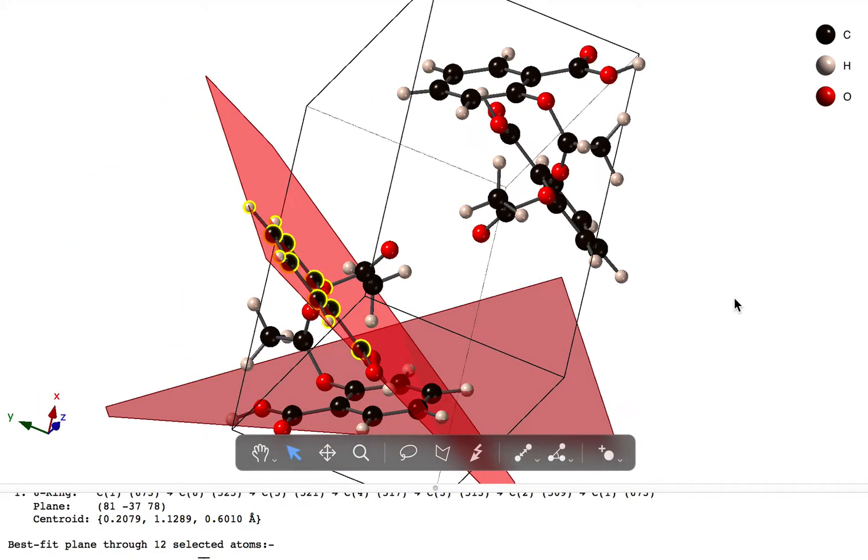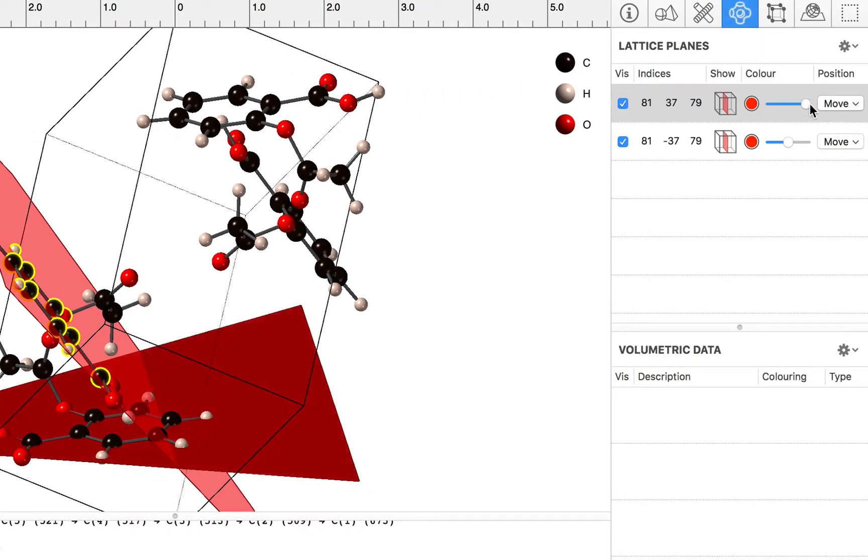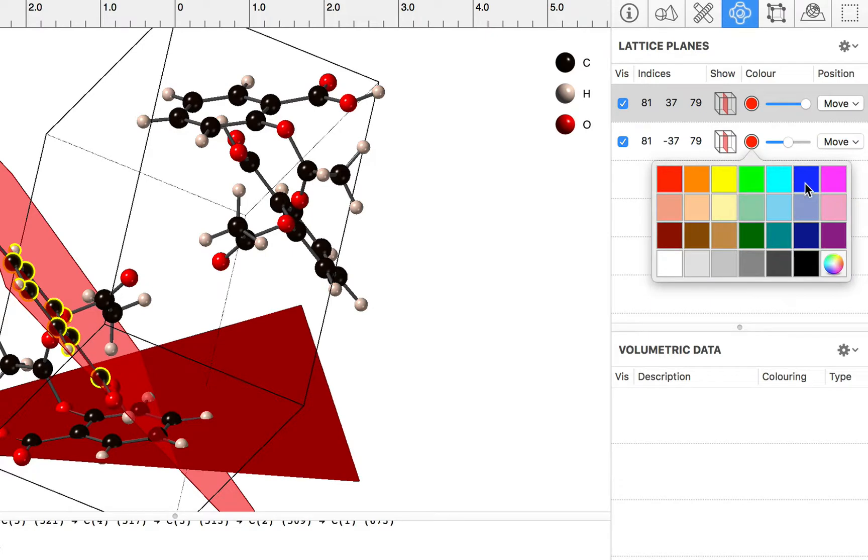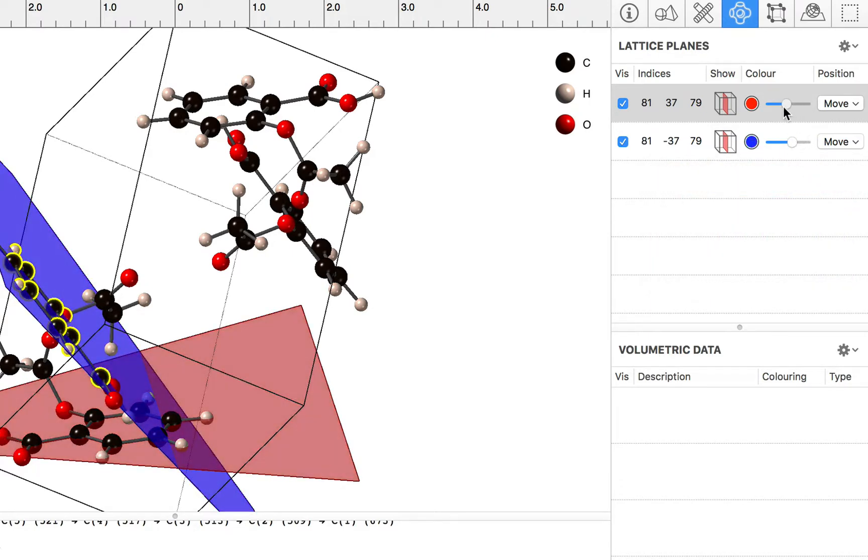Now the planes themselves are listed in the volume inspector, and we can change the colors of these planes. So let's have a blue plane and a red plane, and also their opacities.